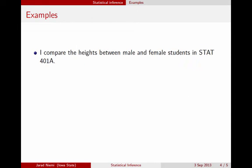Here are a few examples to cement these ideas. As we go through them, think about what's the treatment, what's the response, whether the treatment was randomly assigned, and whether the individuals were randomly selected from a bigger population. For this slide, the population is all Iowa State University students. The first question: we're going to compare heights — that's the response — between male and female students — that's the treatment — in this class. The students were not randomly selected from the general Iowa State population, and the treatment of male and female was not randomly assigned to individuals.